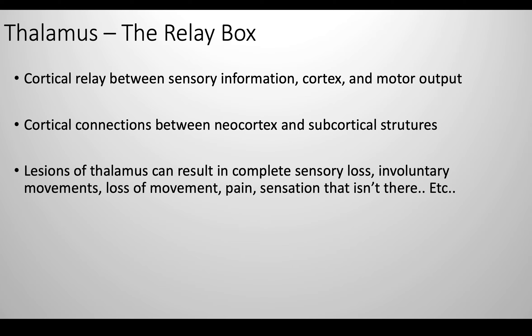To start, I'm going to be discussing the thalamus — the brain's relay box. The thalamus is the brain's relay device, and it integrates sensory information with cortical information. Different specific defects in the thalamus can result in a wide variety of strange neurological diseases. For example, when we discussed Huntington's, there was a theoretical disconnect in the basal ganglia thalamocortical circuitry that produced the behaviors we saw. Lesions of the thalamus can understandably result in complete sensory loss, involuntary movement, loss of movement, pain, or sensations that aren't even there.